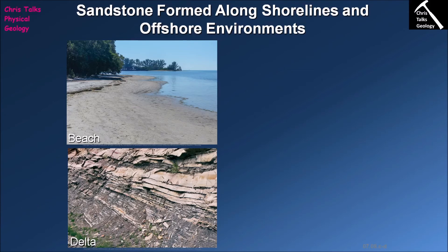Another common environment along the coastline where sand is deposited in large quantities is deltas. In the case of deltas, you often have a mix of sediment — a lot of mud but also a lot of sand — because a delta forms when a river enters a body of water such as a sea, ocean, or large lake. This causes the river water to decelerate very quickly, it loses energy, and starts depositing sediment. This build-up of sediment at the mouth of the river forms a delta, and since rivers are rich in both muddy and sandy sediment, it's not surprising that we see sandstones appearing within a delta sequence.